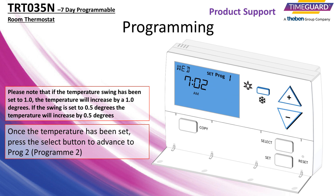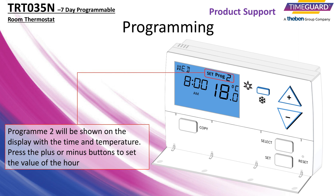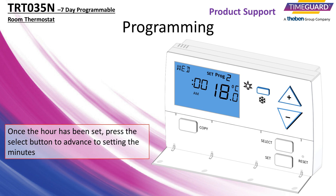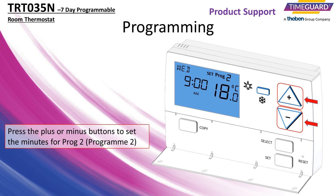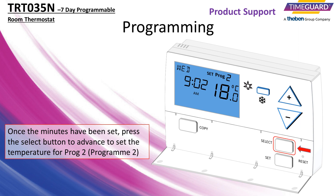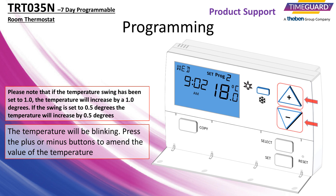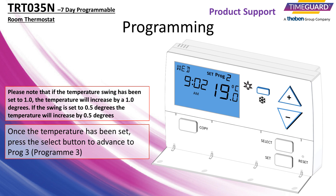Once the temperature has been set, press the select button to advance to program 2. Program 2 will be shown on the display with the time and temperature. Press the plus or minus buttons to set the value of the hour. Once the hour has been set, press the select button to advance to setting the minutes. Press the plus or minus buttons to set the minutes. Once the minutes have been set, press the select button to advance to set the temperature for program 2. The temperature will be blinking. Press the plus or minus buttons to amend the value of the temperature. Once the temperature has been set, press the select button to advance to program 3.